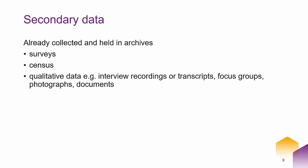The second type of data is secondary data — stuff that's already collected and held in archives like the UK Data Service. It might include surveys, census data, qualitative data, interview recordings or transcripts, evidence from focus groups, photographs or documents. From my experience, using other people's data that's already been collected and validated is generally more effective for most pieces of work you would need to do.